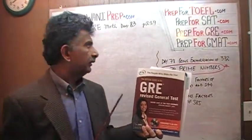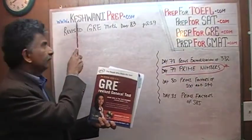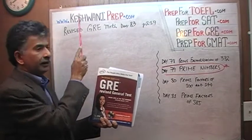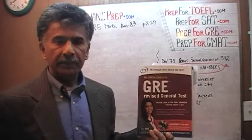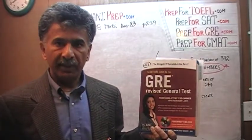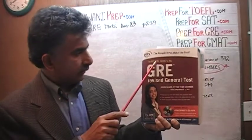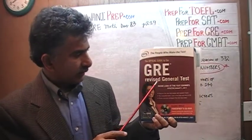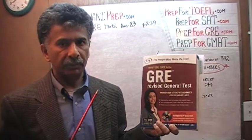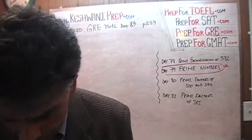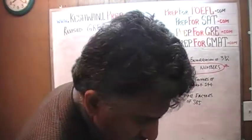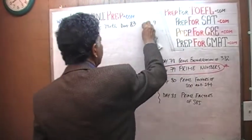Hello, my name is Keshwani — that is K-E-S-H-W-A-N-I. We are here because we want to prepare for the GRE. We have been solving math questions out of this book, the official guide to the GRE, the revised general test. If you do not own this book already, purchase one immediately — you are going to need it. The problem we are about to solve is the one on page 220, the very first problem.